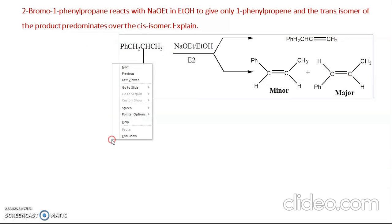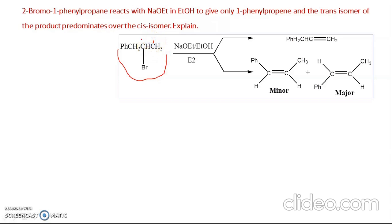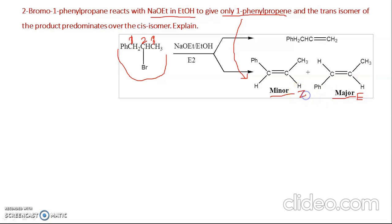The next problem: 2-bromo-1-phenylpropane treated with sodium ethoxide in ethanol gives exclusively 1-phenylpropane. There are two possibilities for 1-phenylpropane — Z (minor) and E (major) — but we are not getting 3-phenylpropane at all. So there are two questions: why only 1-phenylpropane, and why is the E isomer the major product?